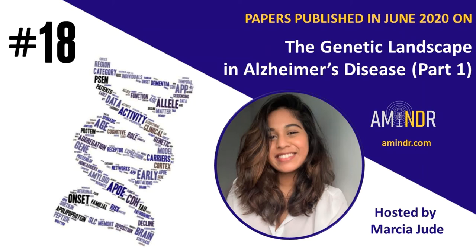The title of the next paper is Apolipoprotein E4 disrupts the neuroprotective action of sortilin in neuronal lipid metabolism and endocannabinoid signaling. It was published in the journal Alzheimer's and Dementia by first author Asaro and last author Willnow. In this study, the researchers look at the neuronal apolipoprotein E receptor sortilin, interested in understanding the role it plays in brain lipid metabolism and its relevance to Alzheimer's disease.